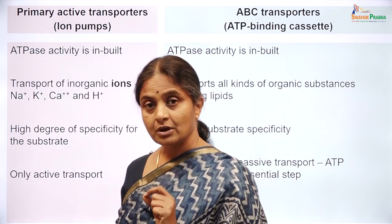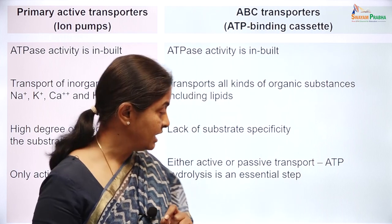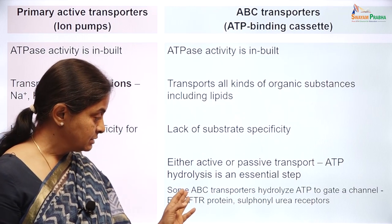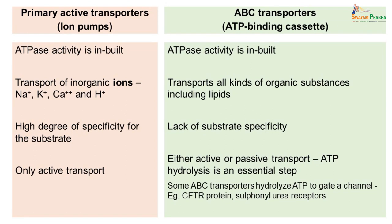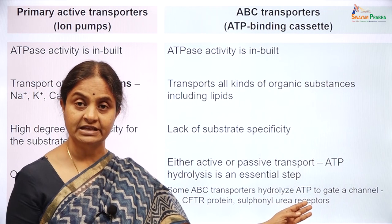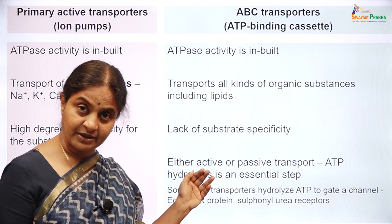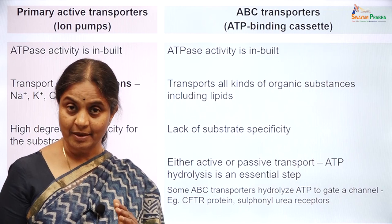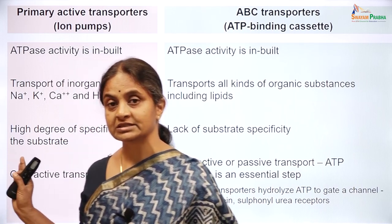Now while the ion pumps will only do active transport, that is movement of the ion against a concentration gradient, the ABC transporters can be either active or passive transporters. In fact, there are some of them which gate a channel. The cystic fibrosis transmembrane conductance regulator, for example, is a famous protein — you will come across this when you learn about cystic fibrosis. And the sulfonylurea receptors found on insulin-secreting cells are ABC transporters as well. ATP hydrolysis will open the channels associated with those ABC transporters. Channels allow diffusion of ions, so they do not have to be transporting against the gradient all the time, while ion pumps always perform active transport.